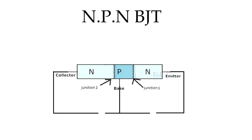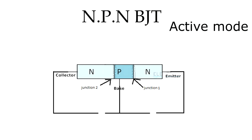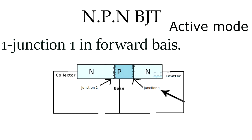So let's start with the NPN transistor. The largest area is called the collector region, the smallest is the base region, and the last one is the emitter region. To operate this transistor in active mode, we need to make junction J1 forward biased — that happens when the N is connected to the negative terminal and the P is connected to the positive terminal. That forward potential is called VEB.